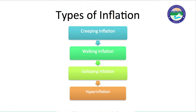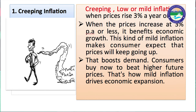Next are the types of inflation. On the basis of range of increase and severity, inflation can be classified into four broad categories: creeping inflation, walking inflation, galloping inflation, and hyperinflation. Creeping or mild inflation is when prices rise 3% a year or less. This benefits economic growth as it makes consumers expect prices will keep going up, boosting demand. Consumers buy now to beat higher future prices, driving economic expansion. So creeping inflation is to some extent good for the economy.